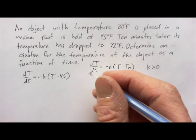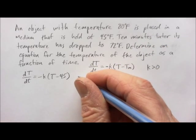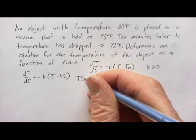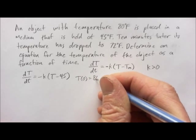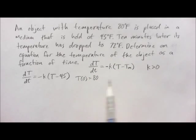And we also know that the temperature at time zero, so T of zero, is 80 degrees Fahrenheit. So, here's our initial value problem right here.